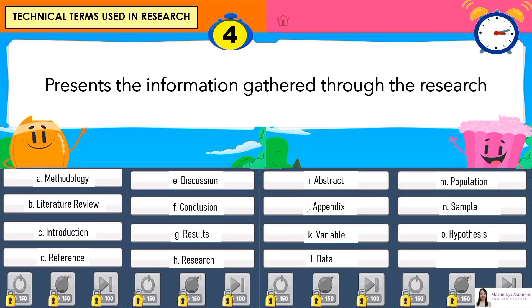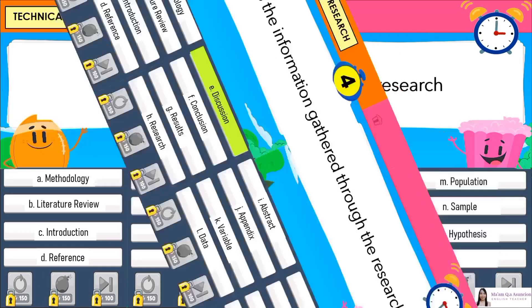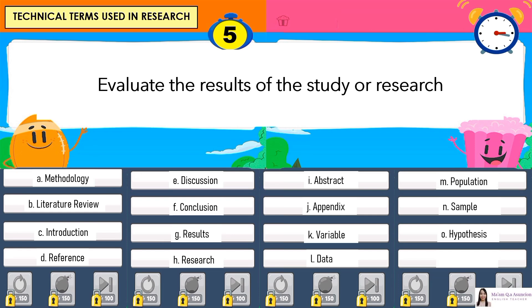Number 4: Presents the information gathered through the research. Answer is E. Discussion. Number 5: Evaluate the results of the study or research. Answer is G. Results.